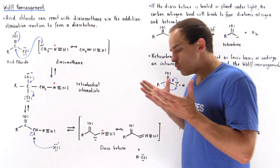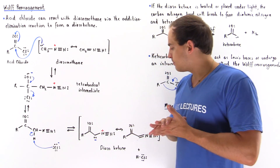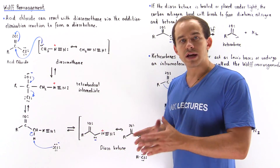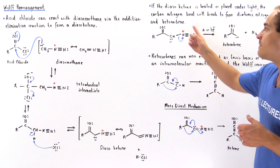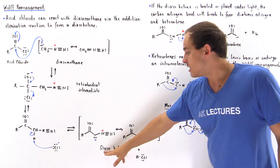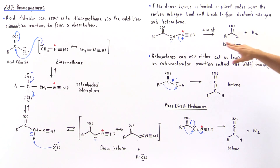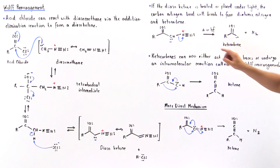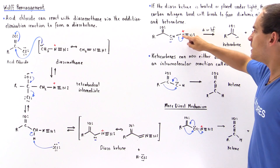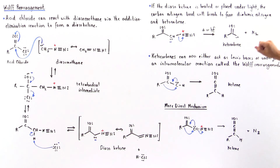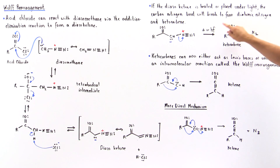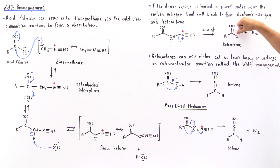The following reaction can take place: if we take our diazoketone and place it in the presence of heat or light, a rearrangement occurs in which the diazoketone forms a ketocarbene. In the presence of heat, the relatively weak bond between the carbon and nitrogen breaks off, we form diatomic nitrogen gas, and we form this ketocarbene, which contains a lone pair of electrons on this carbon.